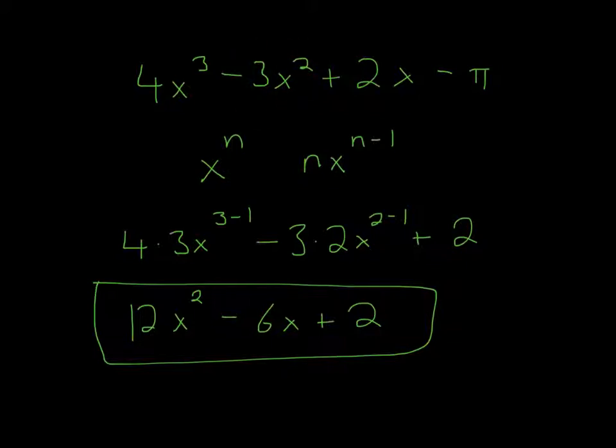Over here we have minus 3x squared, so the 2 comes down, you subtract 1 from the 2, so that's why I show here, the 3 remains, the 2 comes down, and it's 2 minus 1, so 3 times 2 is 6, and then 2 minus 1 is just 1, so you can just leave it as x.